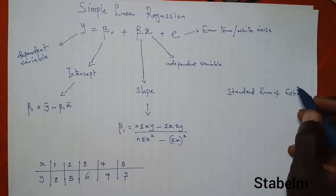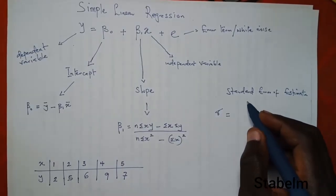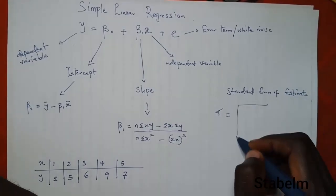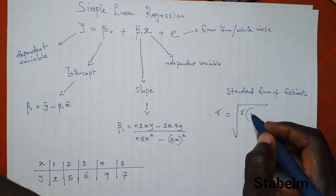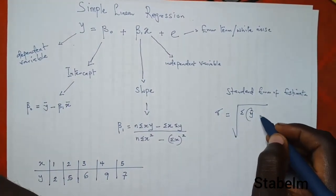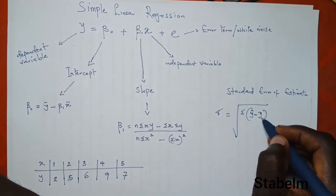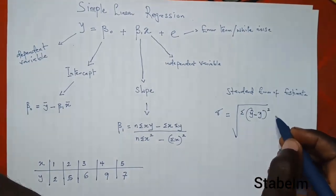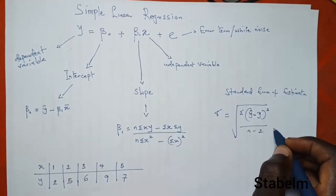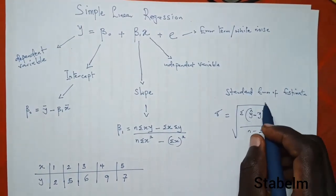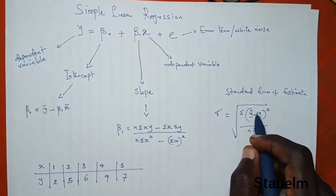The standard error of estimate is given as the square root of summation of (y-estimate minus y) all squared, divided by n minus 2. This is the formula we are going to use to calculate the standard error of estimate.